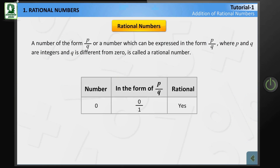For example, we can write 0 as 0 upon 1, so 0 is a rational number. We can write negative 3 as negative 3 upon 1, so negative 3 is a rational number. We can write 2.7 as 27 upon 10, so 2.7 is a rational number.